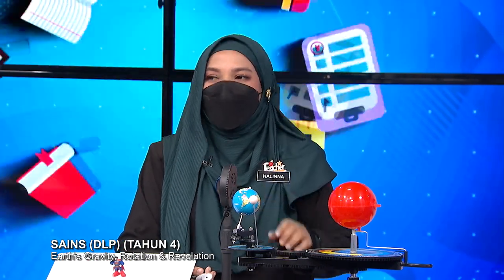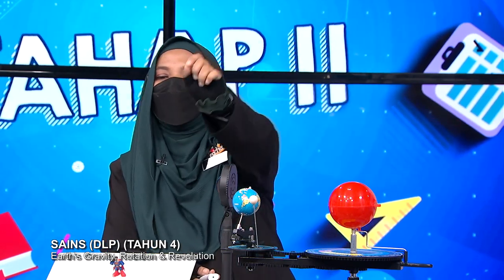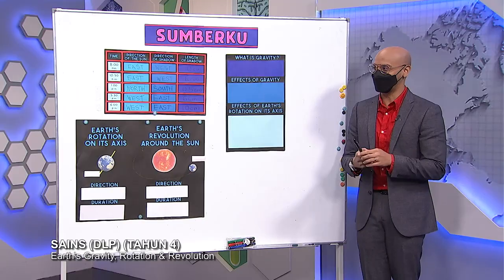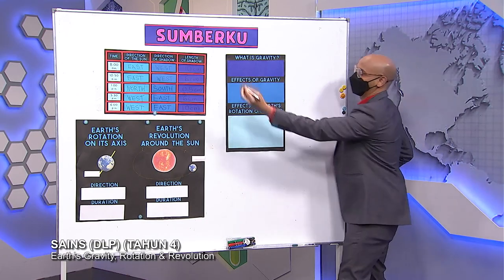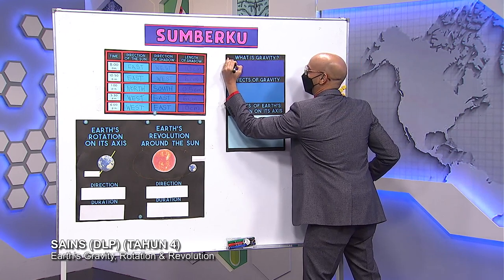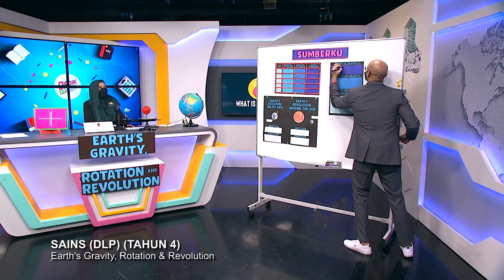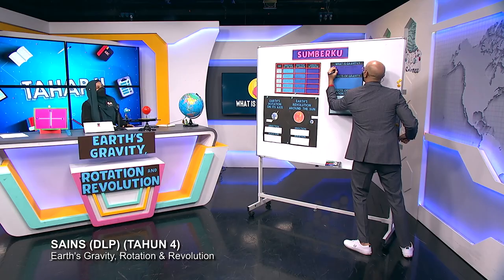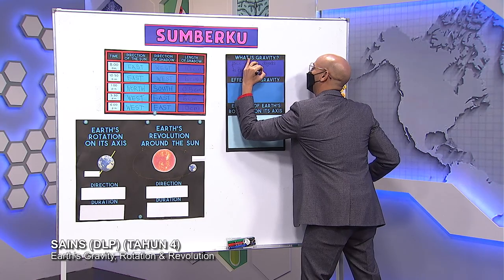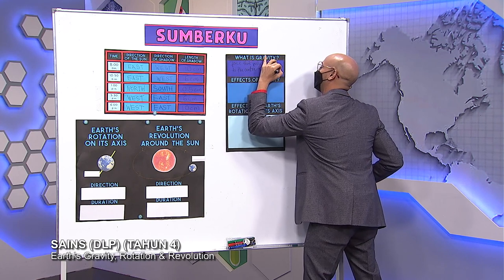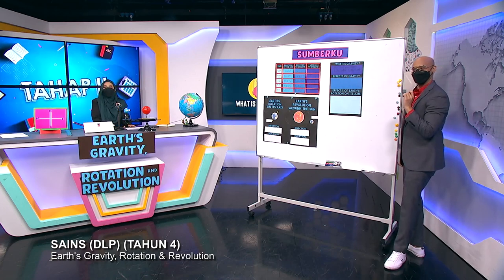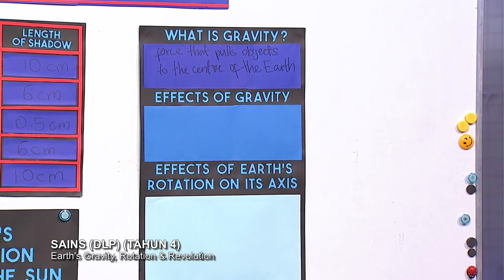Let's start with the first one — gravitational pull on Earth, or simply gravity. What is gravity, Sean? Gravity is a force that pulls objects to the center of the Earth. Let me write that down. Gravity is a force that pulls objects towards the center of the Earth. You are right.